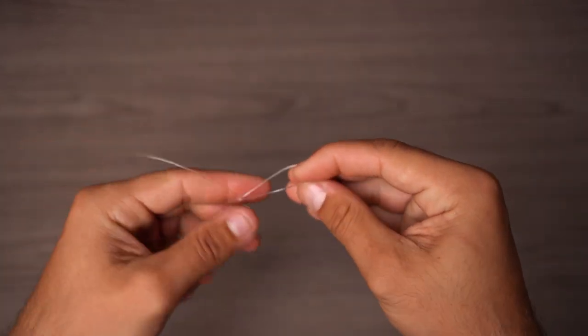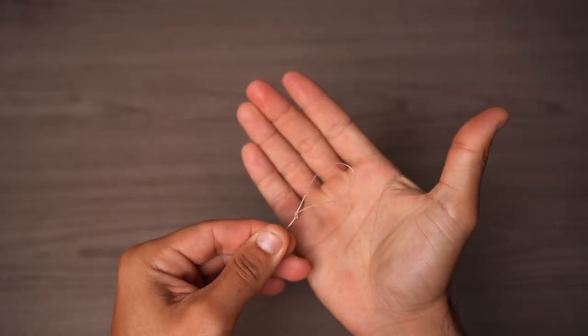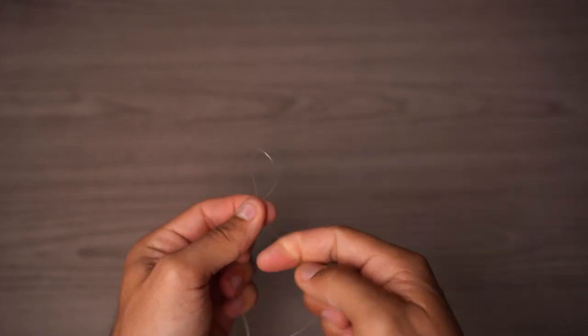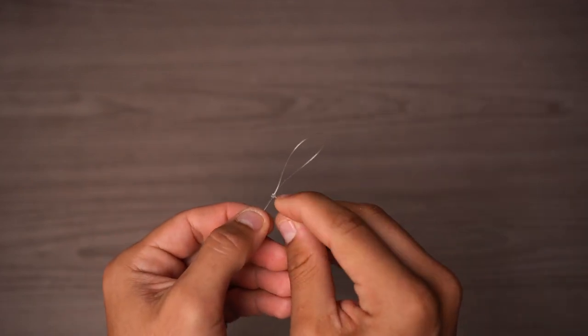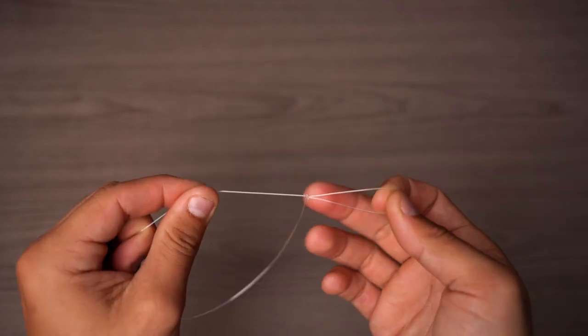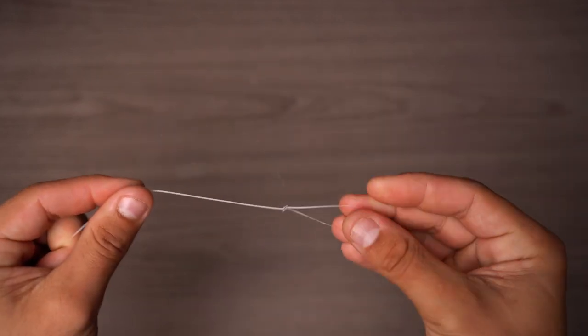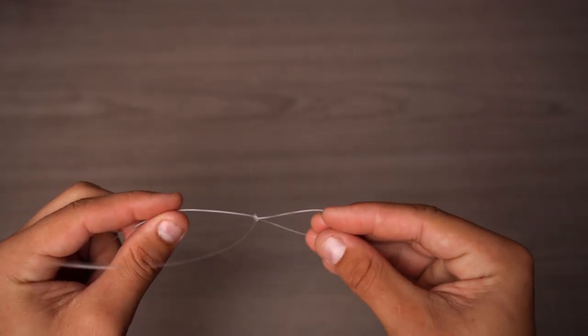So that's going to be your perfection loop right there. As you can see, I actually do like to come in here, cut this tag end, and burn it just a little bit with a lighter, and kind of mushroom out the side. It makes the knot snag free basically. You could also coat it with a little bit of loon, or zap, or any kind of glue that you'd like.